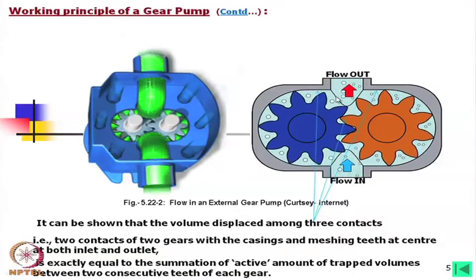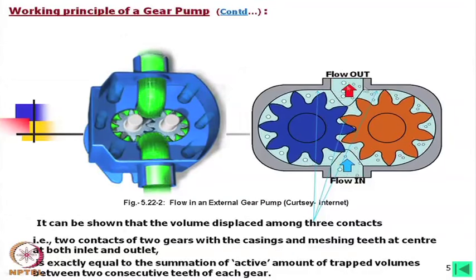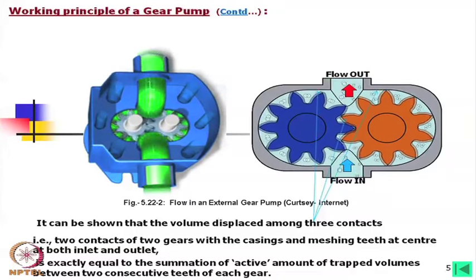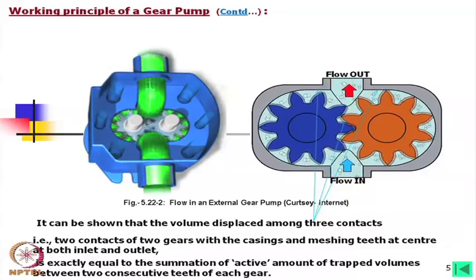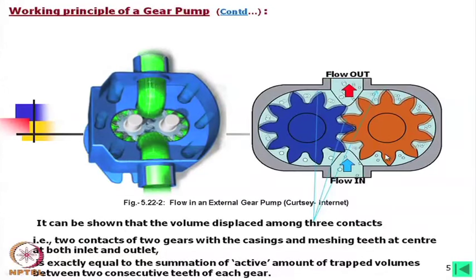However, if we calculate the total displacement of this area during suction and compression, that inactive volume will automatically be deducted from the calculated area. We need not worry about how large the pocket is — that means if we give more undercut or increase the root fillet of these gears, that will not really matter. This is one thing.